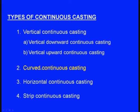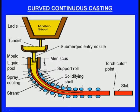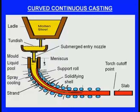Next, let us see the curved continuous casting. The curved continuous casting schematic is similar to the vertical downwards casting, but there is a difference. In the case of vertical downwards casting, the bar only comes downwards — it does not bend or take any curve. But here, the molten metal from the tundish comes downwards to some extent, then it takes a curve and becomes horizontal. That is the curved continuous casting.